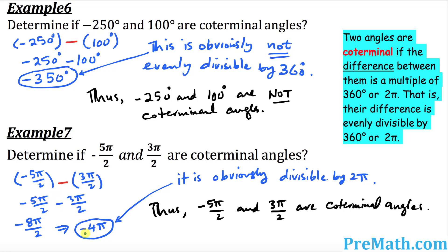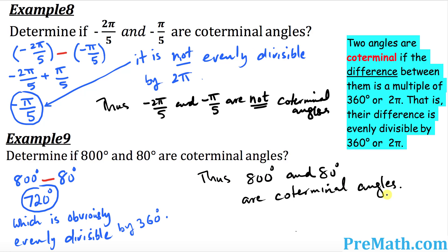In example 7, subtracting the two angles gives negative 4π, which is divisible by 2π, so they are coterminal. In example 8, the difference of negative 2π/5 and negative π/5 is negative π/5, which is not evenly divisible by 2π — so those two angles are not coterminal. In example 9, the difference is 720 degrees, which is divisible by 360, so 800 degrees and 80 degrees are coterminal angles.